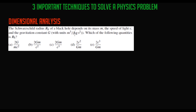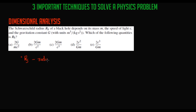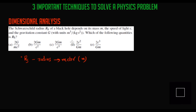We have to find which of the following quantities is RS. We know RS is a radius, so it has a unit of meter. The speed of light C has a unit of meter per second.